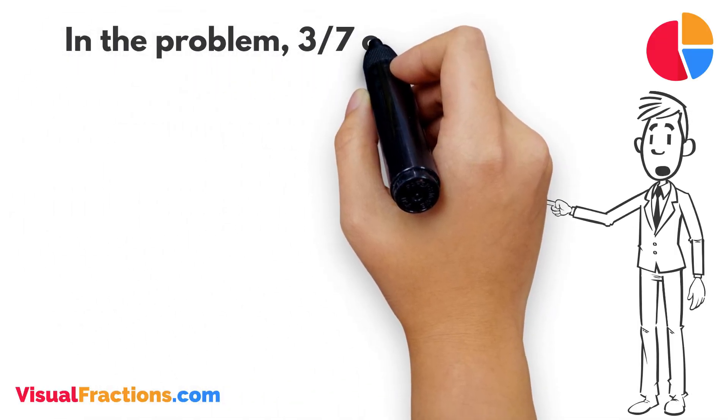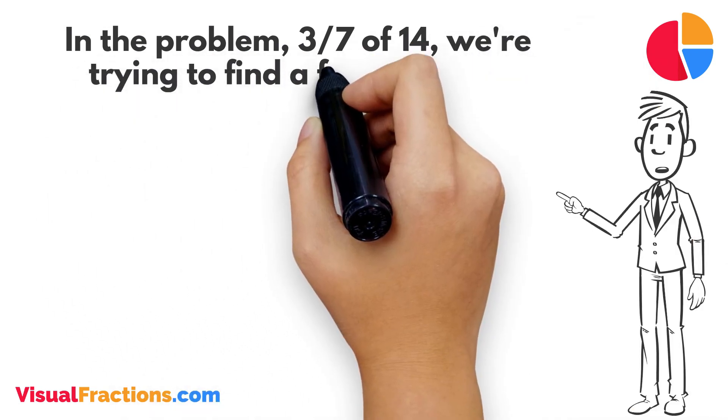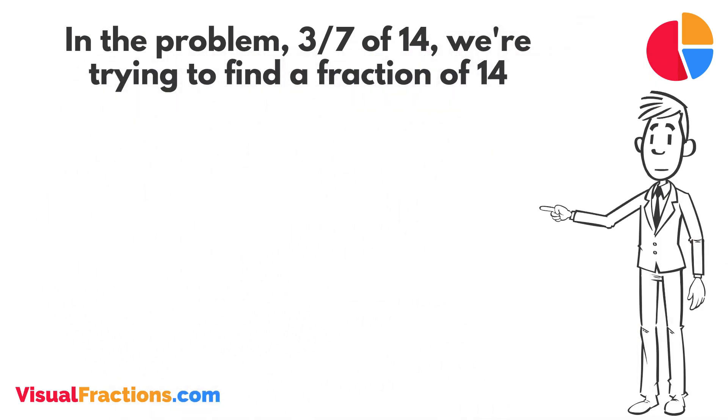In the problem, 3 7ths of 14, we're trying to find a fraction of 14. Since we're only taking a part of it, we know our answer will be less than 14.